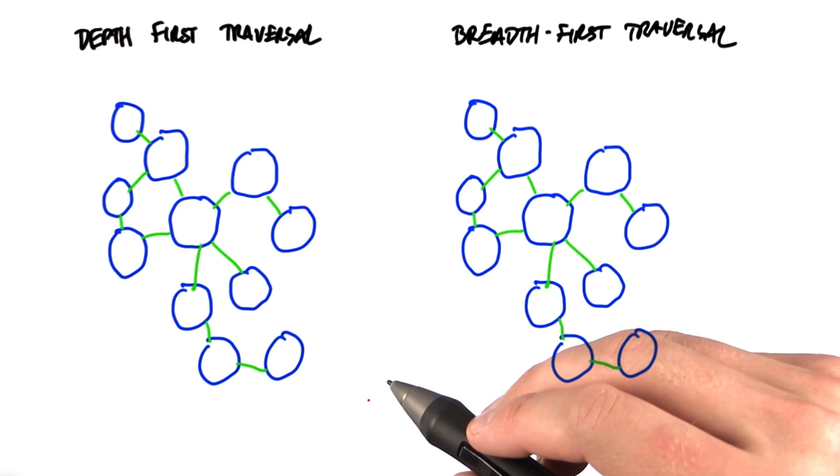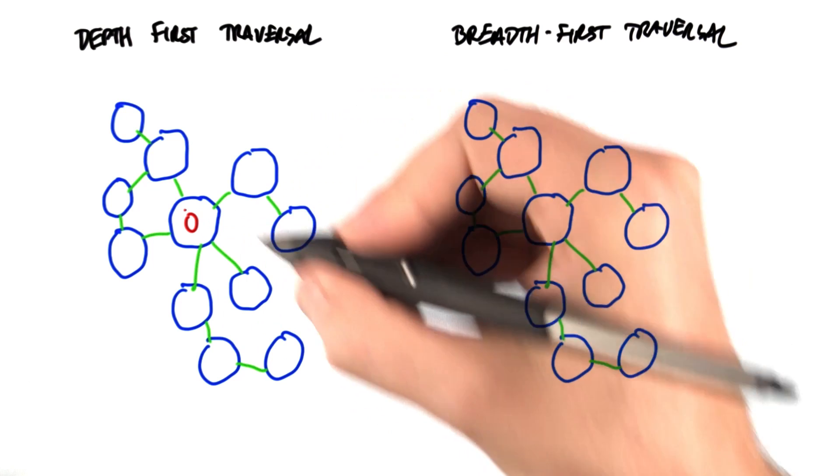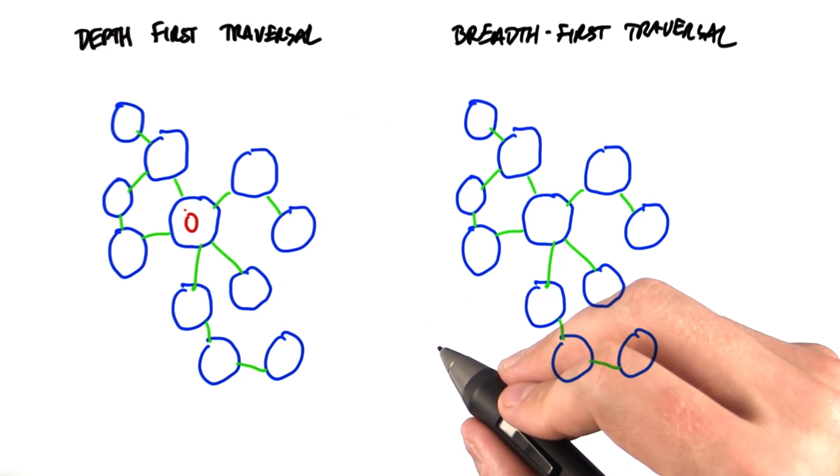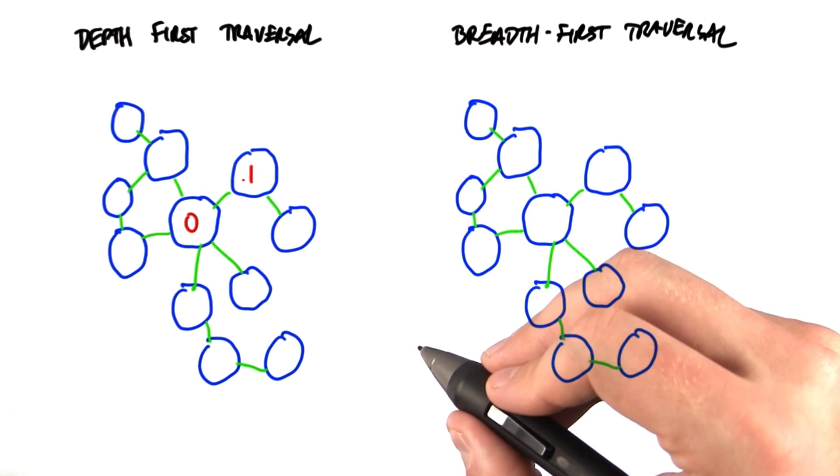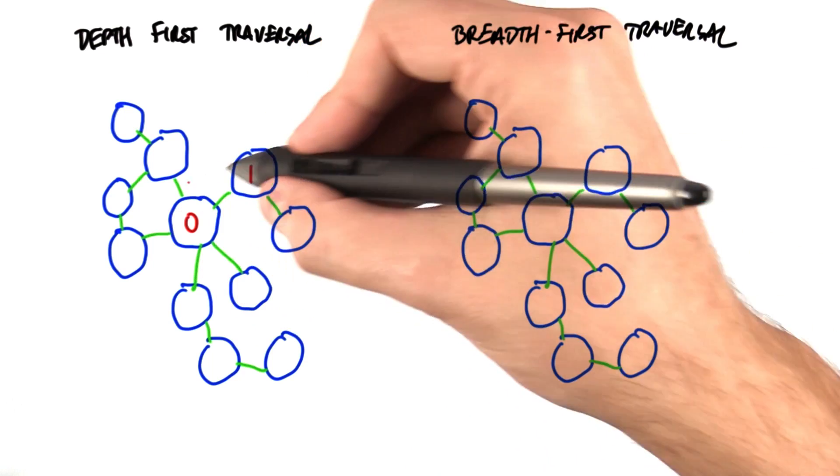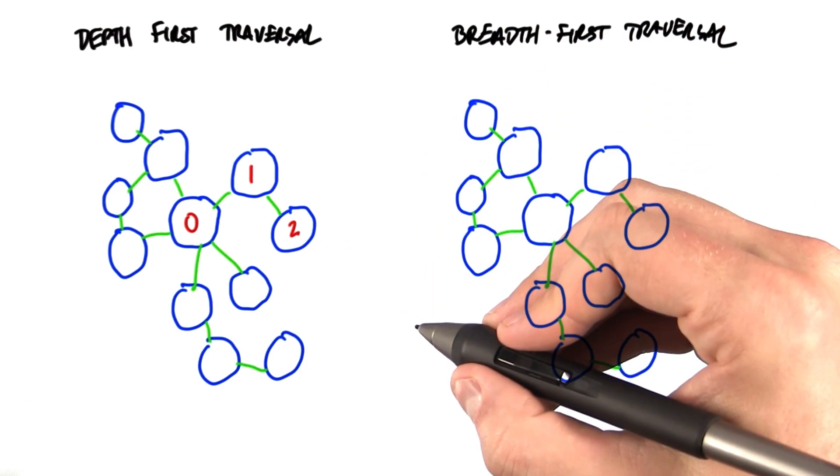In a depth-first traversal, we begin at a particular node. So we're going to pick this one in the middle and we're going to label it 0. We're going to pick a neighbor we haven't visited yet, let's say this one here. And then we're going to do a depth-first traversal from that node. So we're going to continue down the chain, label this one, and so on.